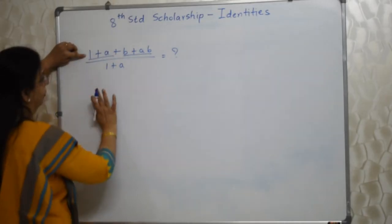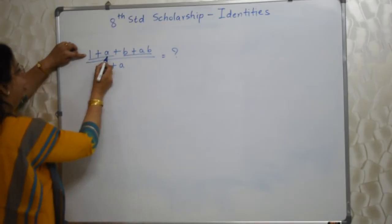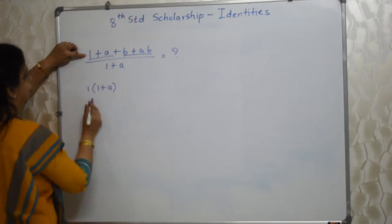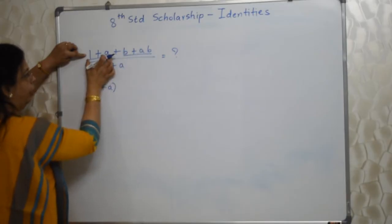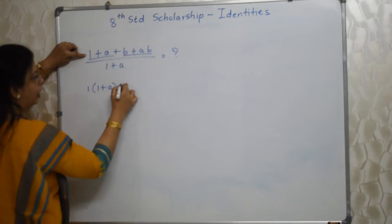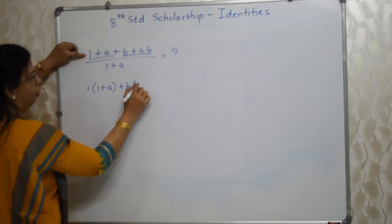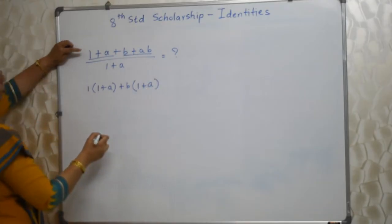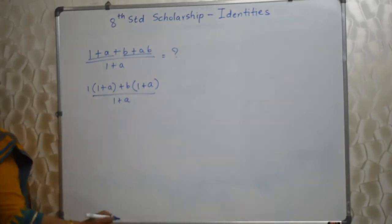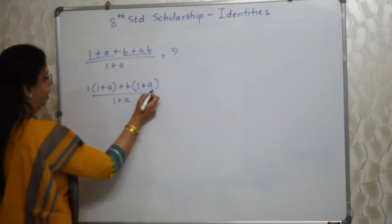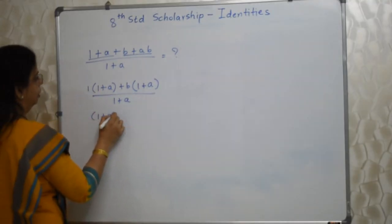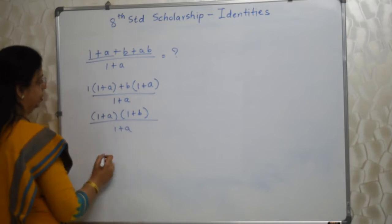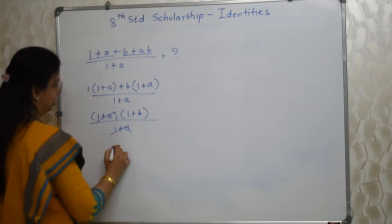We need to find factors of the numerator. From the first group, there is nothing common between 1 and a, so take out 1 giving 1·(1+a). From the second group, b is common: b·(1+a). Now (1+a) is common from both groups, so factor it out: (1+a)(1+b). The denominator is (1+a). So (1+a) cancels and the answer is (1+b).